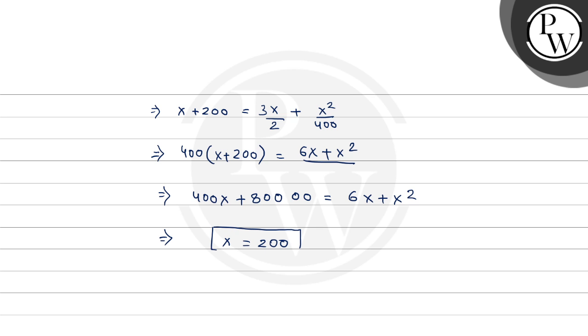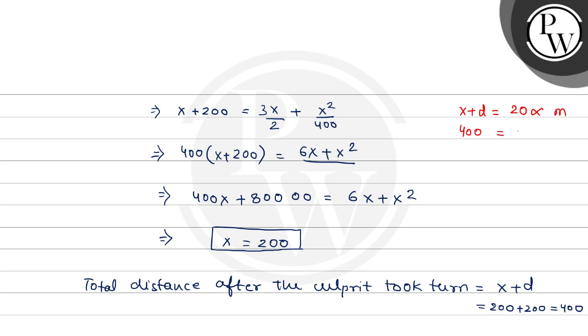This is our X distance. Total distance after the culprit took the turn equals X plus D, that is 200 plus 200 equals 400. Now this distance X plus D equals 20 alpha meters. 400 equals 20 alpha meters, so from this we get alpha equals 20. The value of alpha is 20. This is the required answer. Hope you understood the explanation well. All the best.